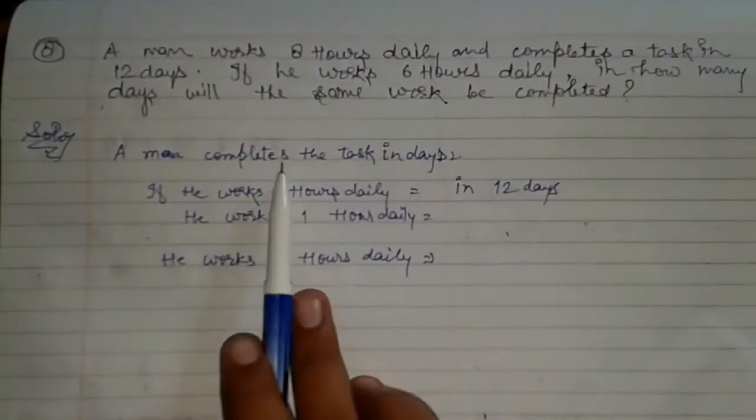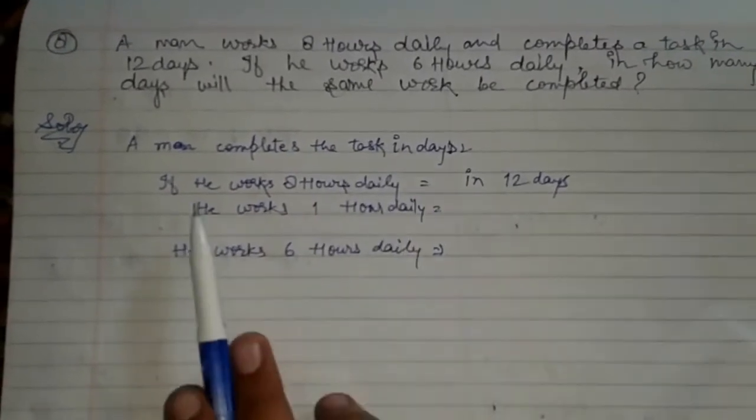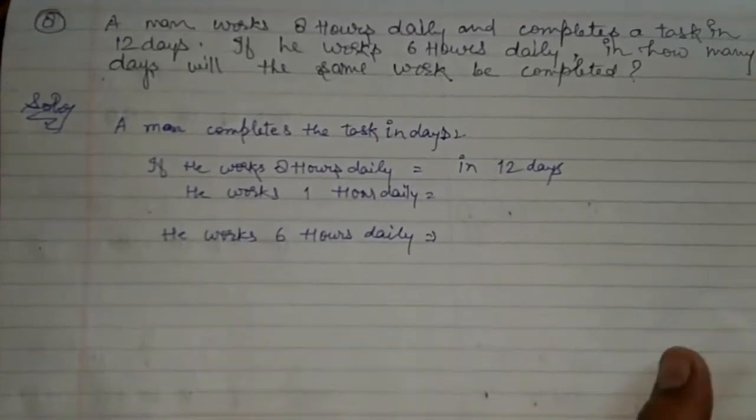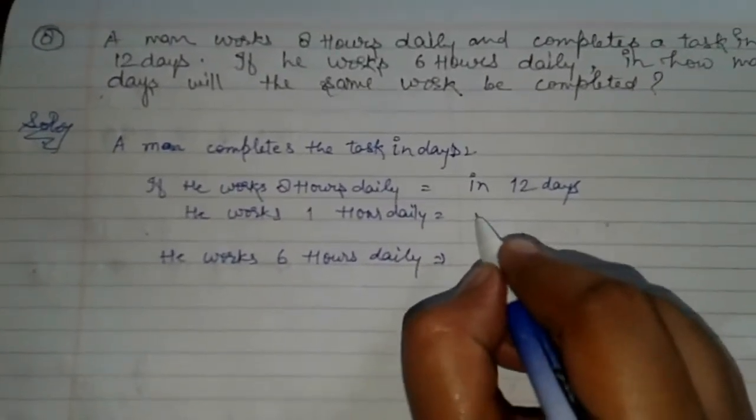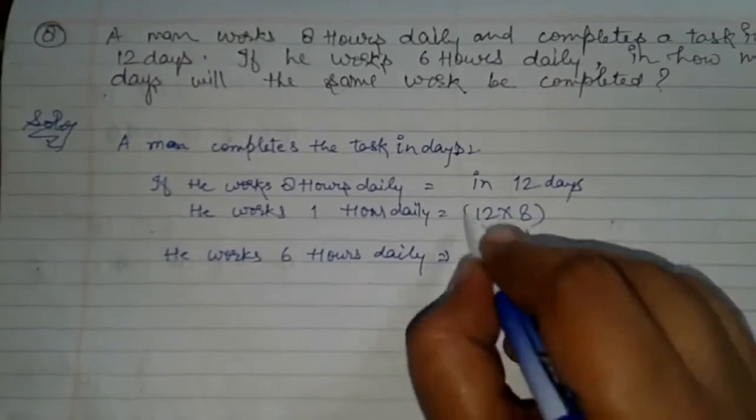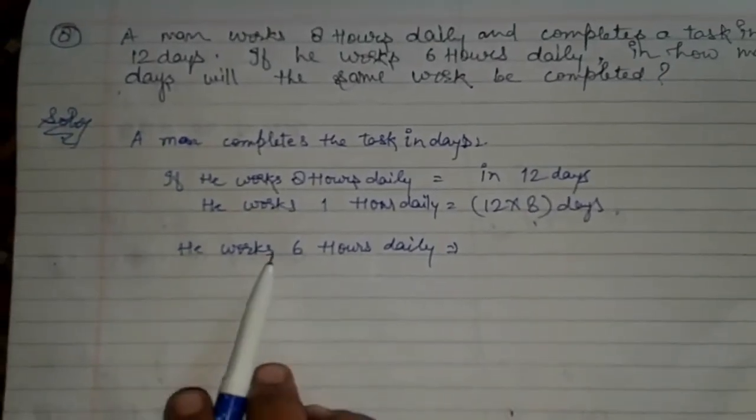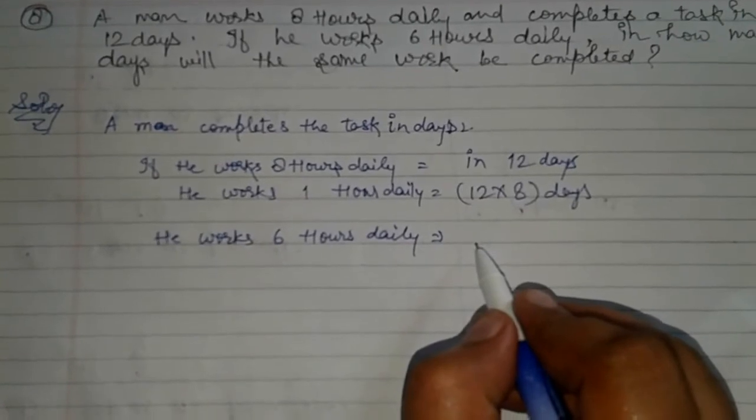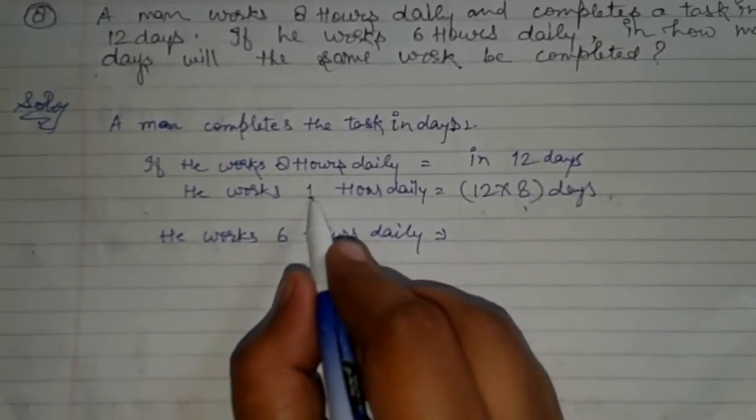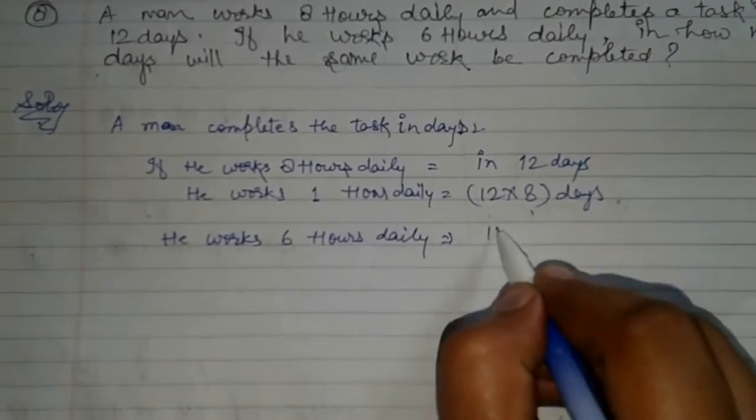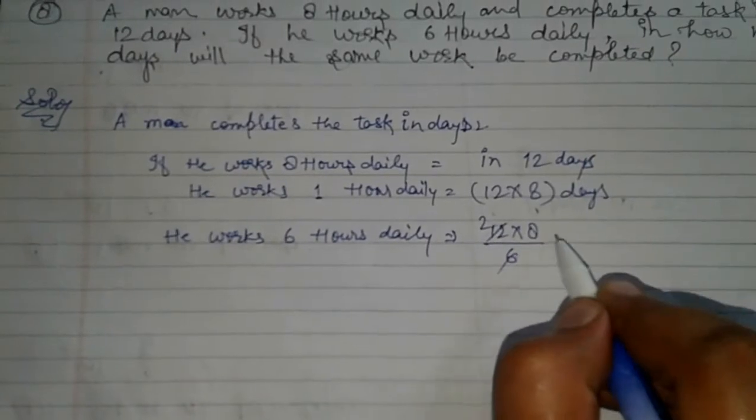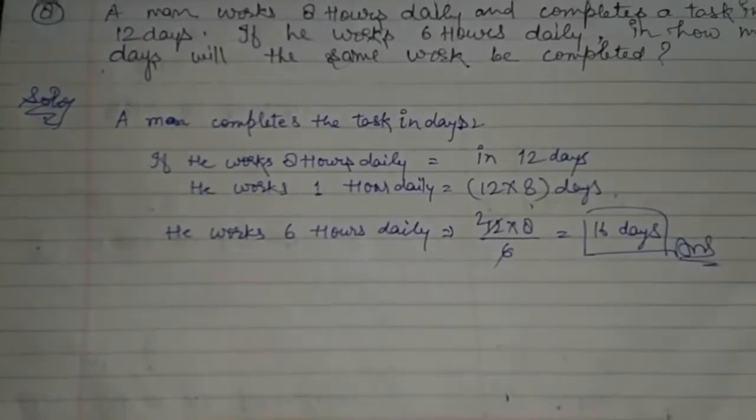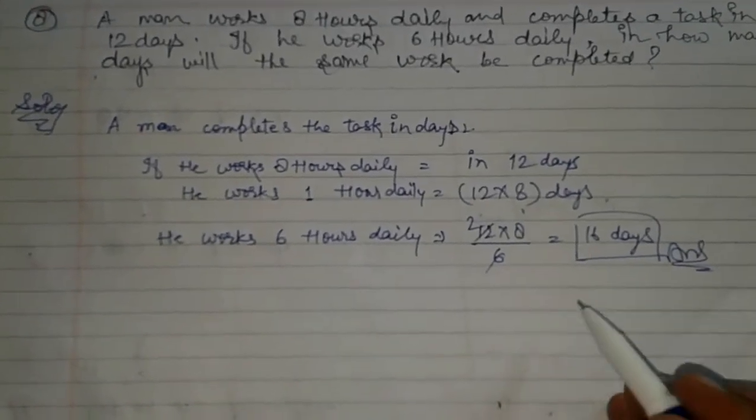Let's start. A man completes the task in days. If he works 8 hours daily, then in 12 days. If he works 1 hour daily, in less days or more days? More days. So, 12 multiply 8 days. And if he works 6 hours daily, then less days. 12 multiply 8 upon 6. 6 to the 12 and 8 to the 16 days. The work will be finished in 16 days if he is working 6 hours daily.